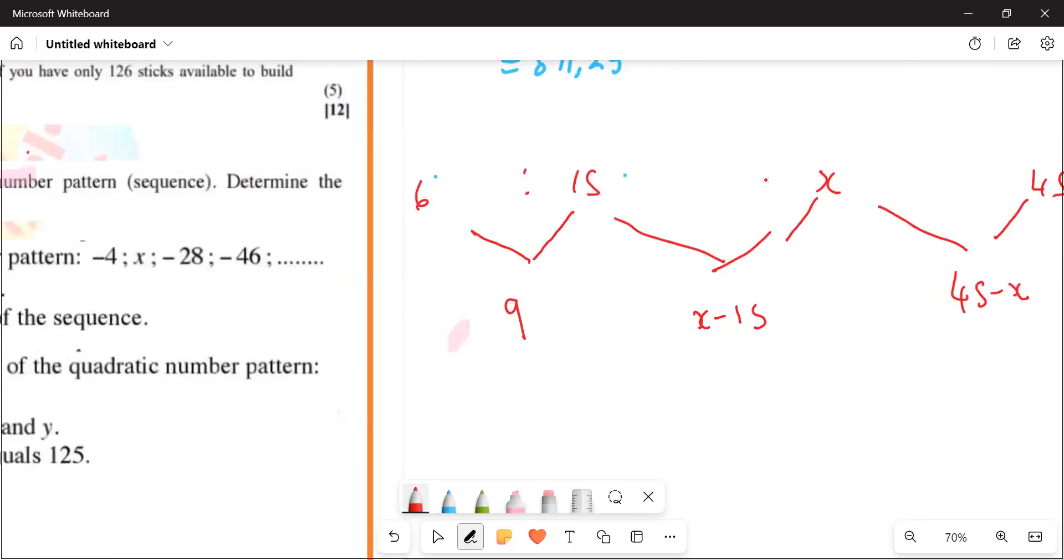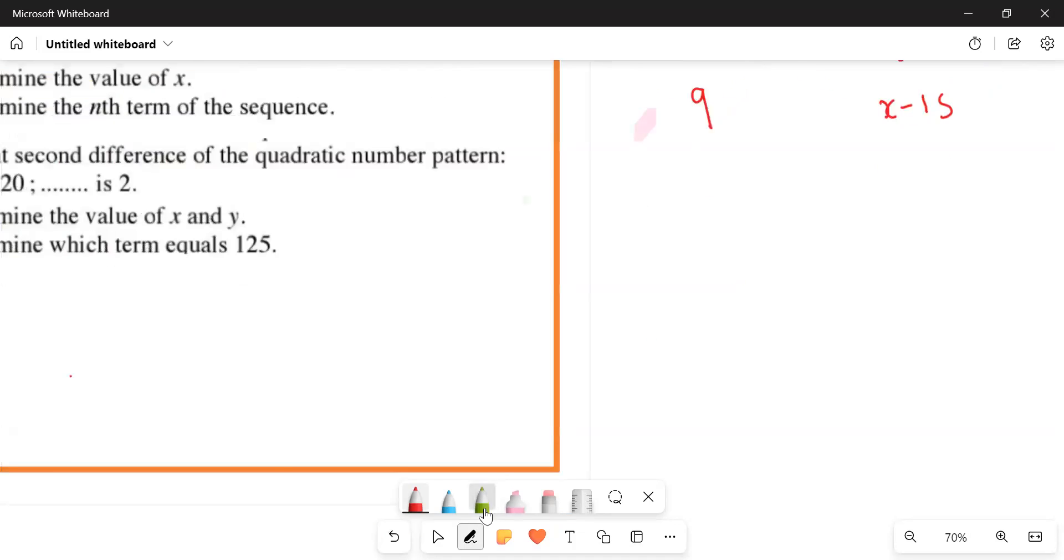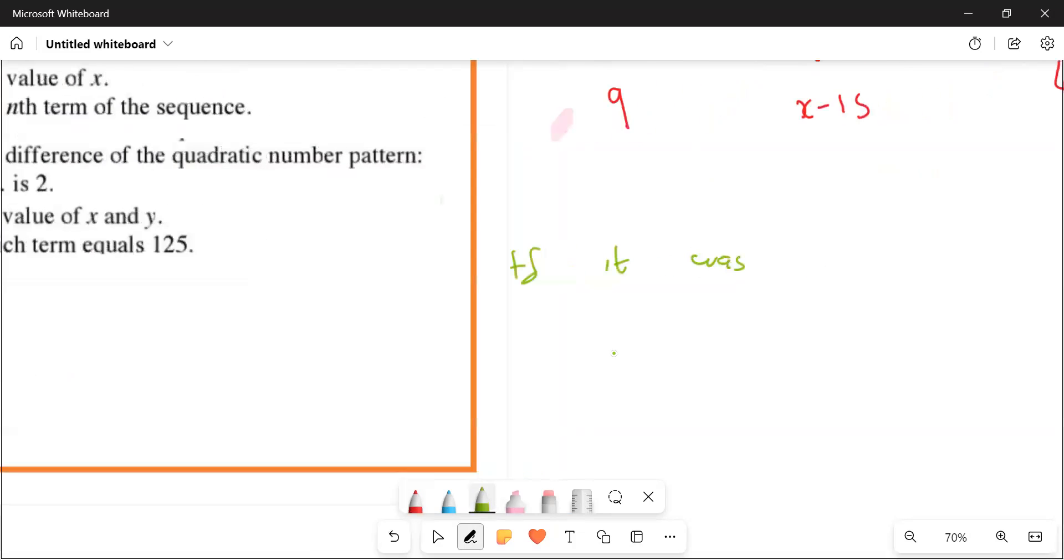Now, if this thing was linear, if they told us this thing here is a linear pattern, and then they say determine the value of x, I'm going to write it with a red color so that you'll remember. If it was linear, I'm being specific, don't do this. You can only do this if it was linear.